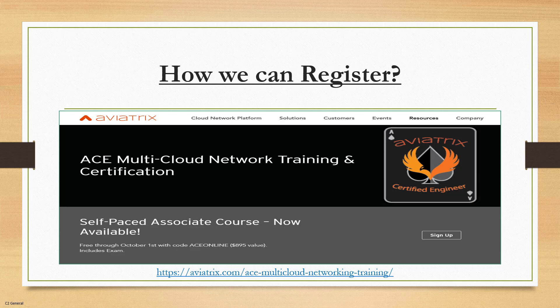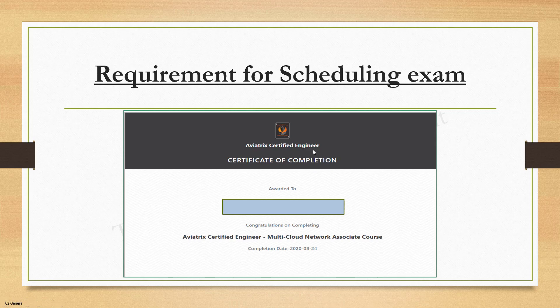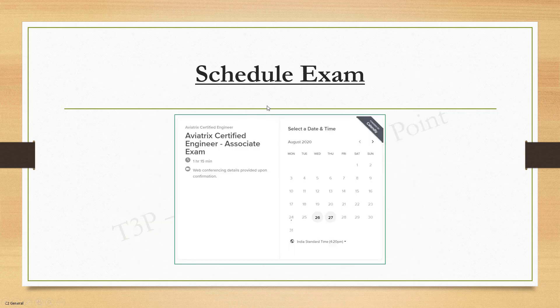Once you register, go through all the training modules. After completing all modules, you will get a training completion certificate — I got mine on August 24th. Once done, it will ask you to schedule your exam under the exam section. You can choose any available date before October 1st; there are currently two dates available this month, and more slots in September and up to October 1st.